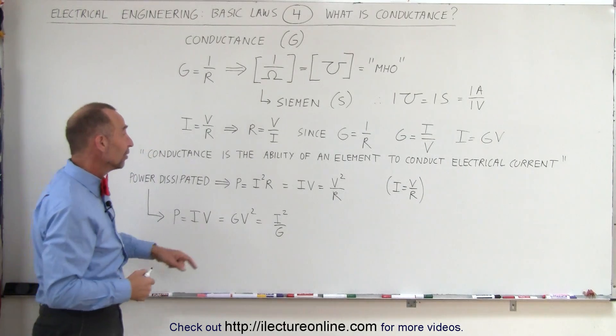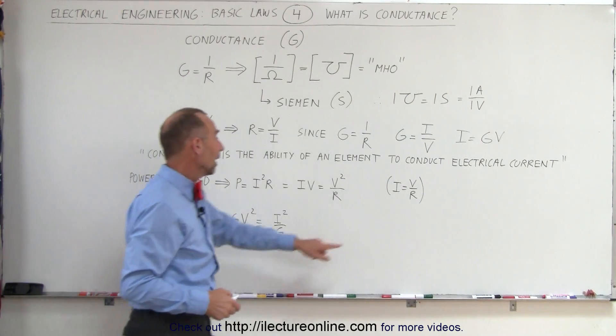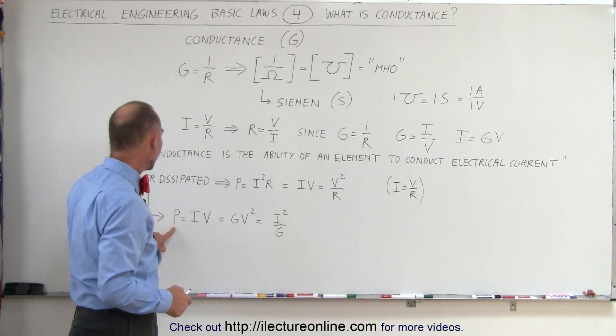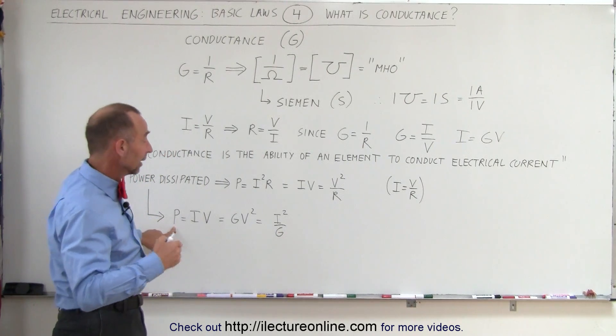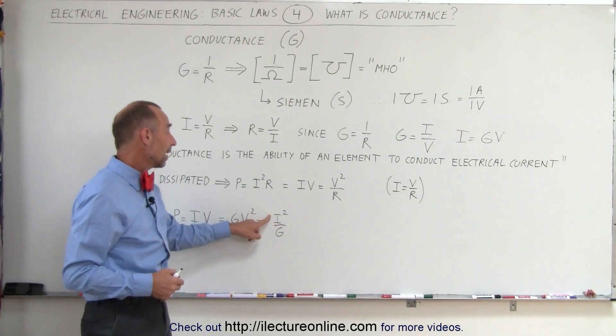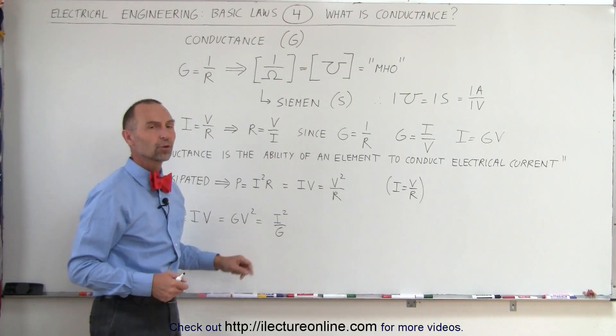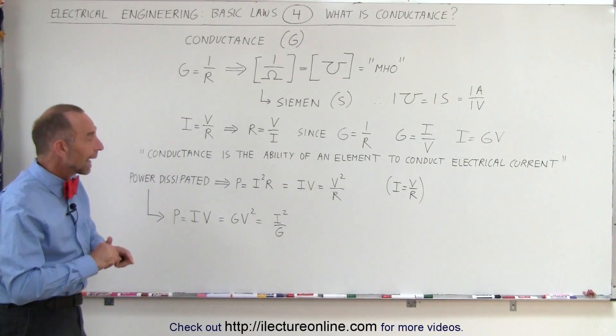and again, if we substitute G for I divided by V, we can then write P, the power dissipated by an element in the circuit, is equal to I squared divided by G. So those are different ways in which we can look at conductance,